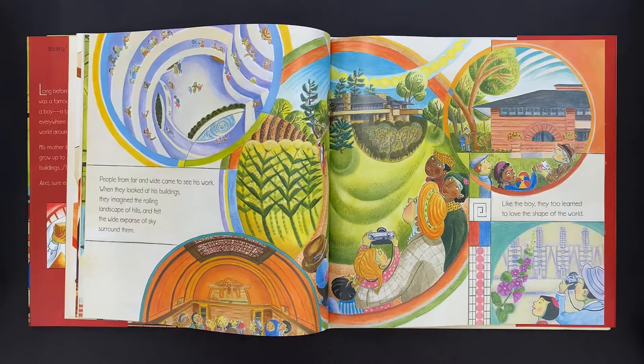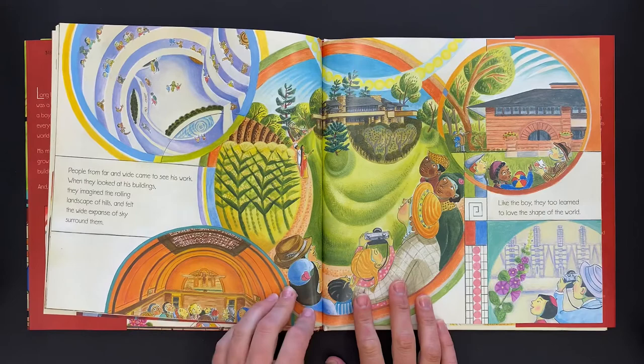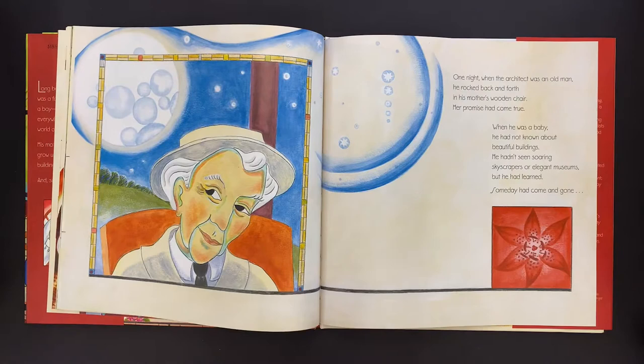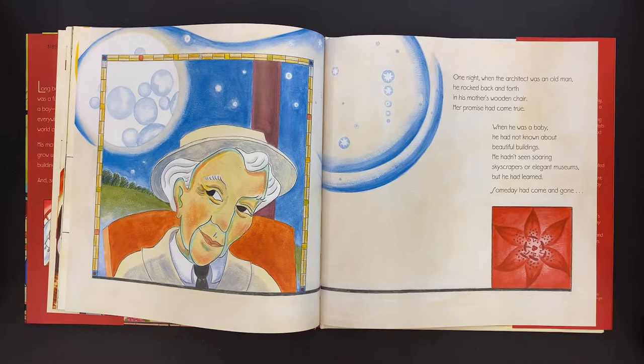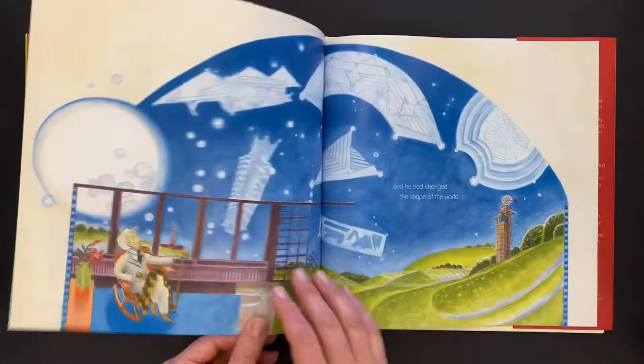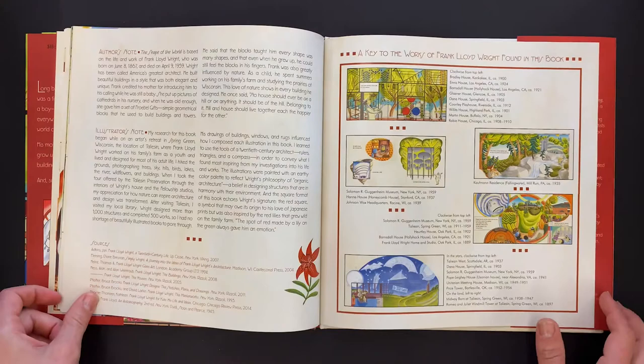People from far and wide came to see his work. And when they looked at his buildings, they imagined the rolling landscape of hills and felt the wide expanse of sky that surrounded them. Like the boy, they too learned to love the shape of the world. One night when the architect was an old man, he rocked back and forth in his mother's wooden chair. Her promise had come true. When he was a baby, he had not known about beautiful buildings. He hadn't seen soaring skyscrapers or elegant museums. But he had learned. Someday had come and gone. And he had changed the shape of the world. The end.